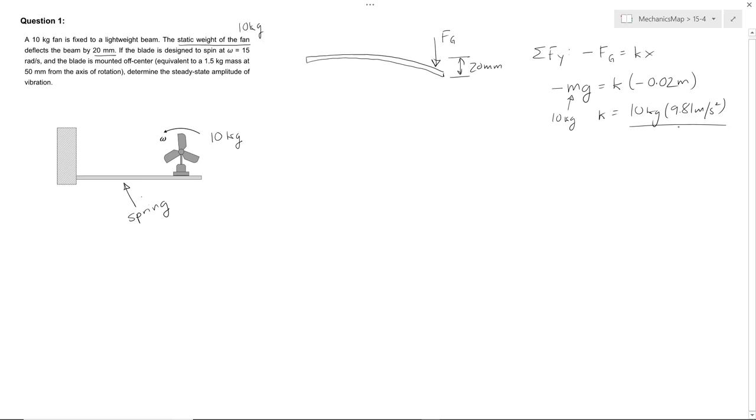So our spring constant, again our spring is the lightweight beam, is 4,905 newtons per meter.